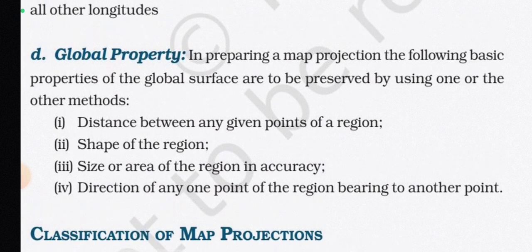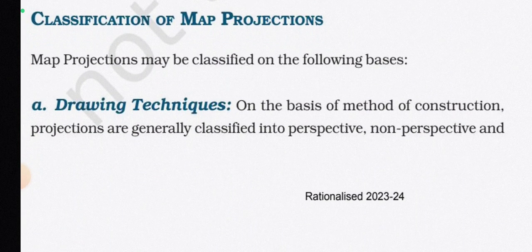In preparing a map projection, the following basic global properties must be preserved: distance between any given points, shape of the region, size or area of the region, and direction or bearing from any point to another. These four properties are the key global properties to maintain.